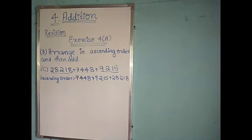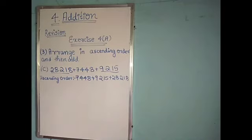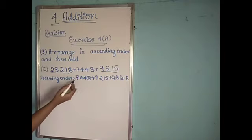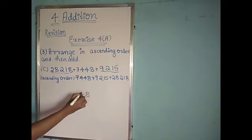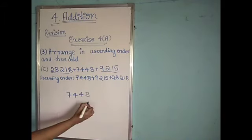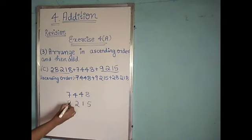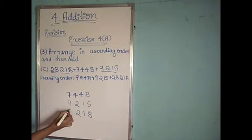Next, we have to add these numbers. It is very difficult to add such numbers directly, so we have to arrange them in columns. Whenever you arrange these numbers, you must write them from the ones place. First number 7,448: write 8, 4, 4, 7. Next number 9,215: write 5, 1, 2, 9. Next number 20,218: write 8, 1, 2, 0, 2.